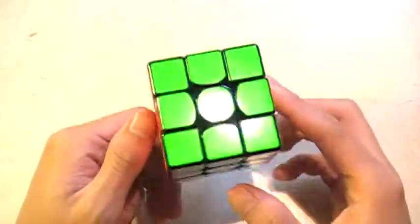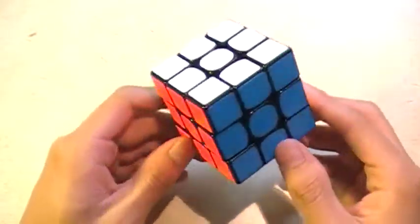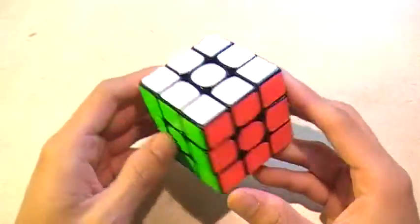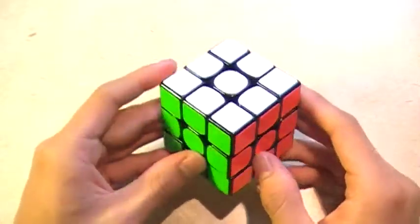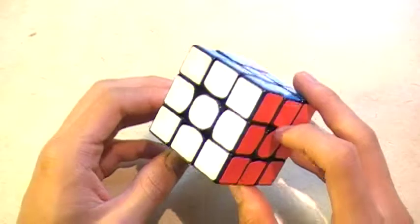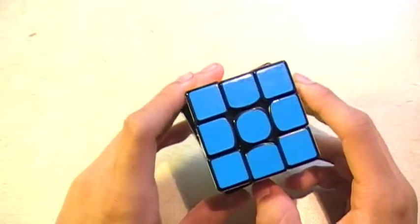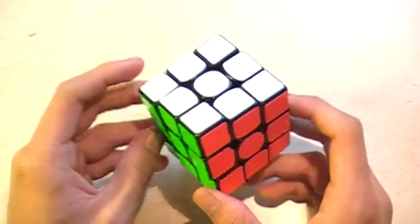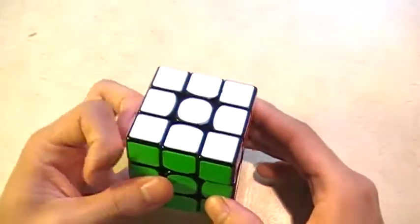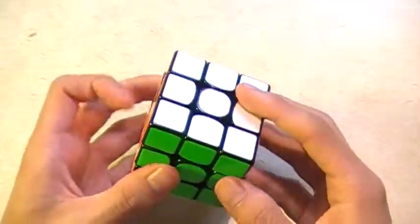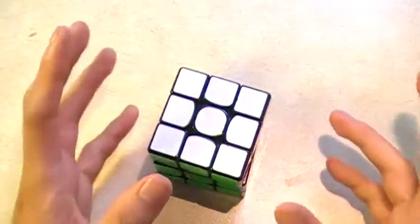Hey everyone, today I'm going to do a review on the Gans 356. You can purchase this on the Cubicle or buy it at thecubicle.us, and I think you can buy it at lighttake now. I saw they had some post about it on Facebook. I'll leave a link in the description for where you can buy it below. Let's just get started.